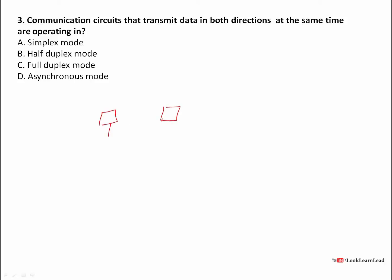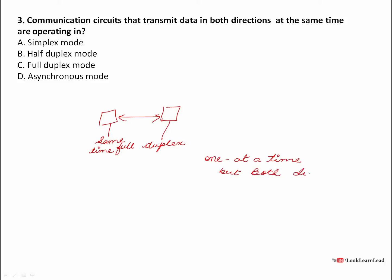Next: communication circuits that transmit data in both directions at the same time. So we have two systems in a communication network transmitting data in both directions at the same time — this is known as full duplex mode. One at a time but both directions is half duplex. I have made a video for this in the computer network basic section. The answer is full duplex.